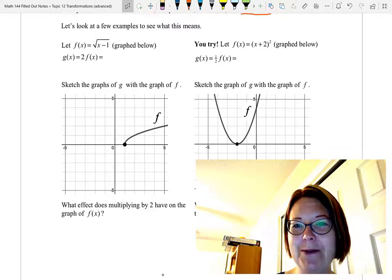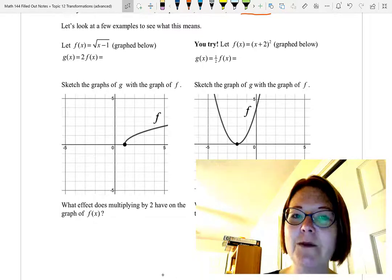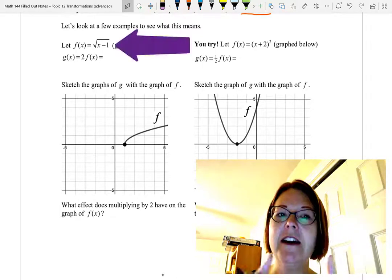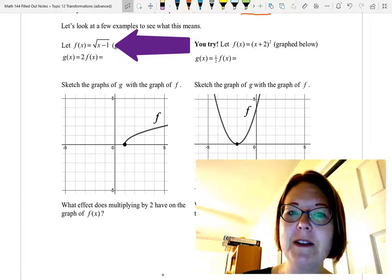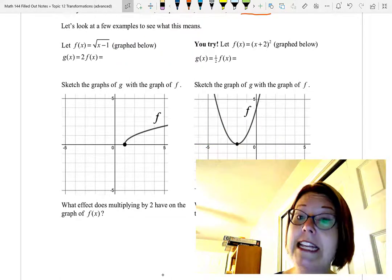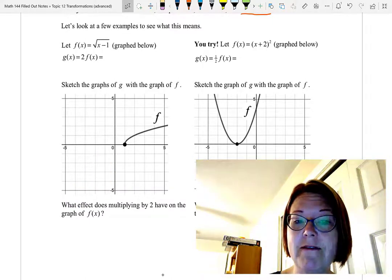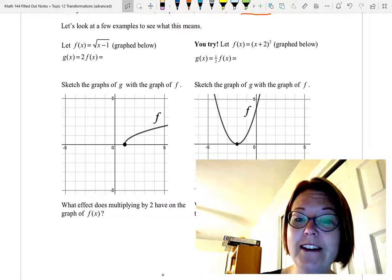Let's take a look at a few examples and see what that means. We're going to start with a function f(x) equals the square root of x minus 1. The graph of this square root function is below. It has an endpoint at 1 comma 0 and it increases gradually from there, and we're going through the points 2, 1 and 5, 2.